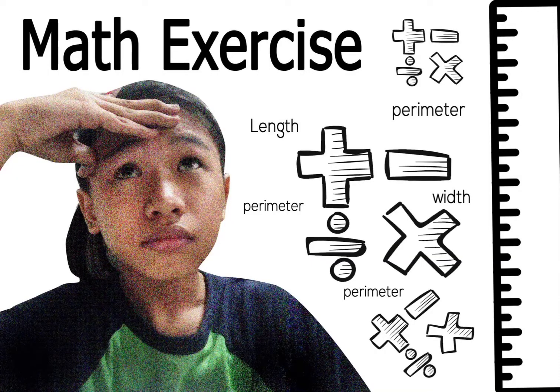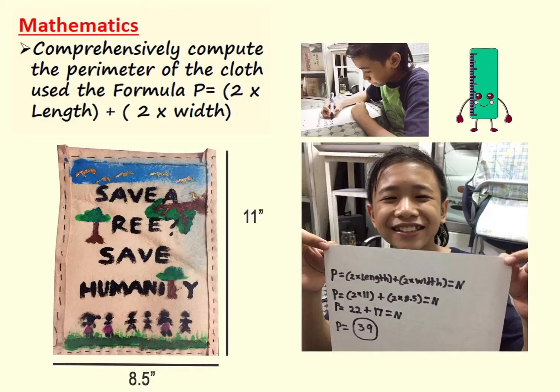Now on to our math exercise. Compute the perimeter of the cloth. Use the formula P equals 2 times length plus 2 times width. My given is 11 for length and 8.5 for width. P equals 2 times 11 plus 2 times 8.5. So the perimeter of the cloth is 39.